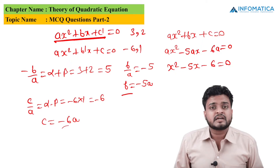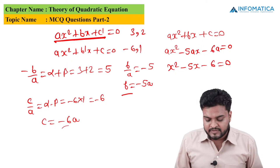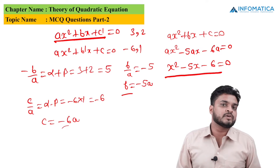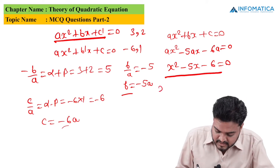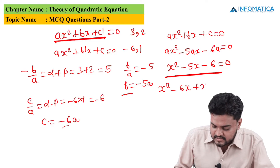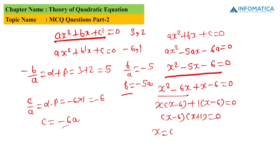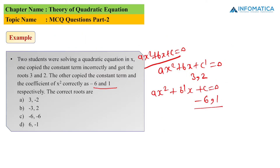Factoring x² - 5x - 6 = 0: we need factors of 6 that differ by 5, which are 6 and 1. So x² - 6x + x - 6 = 0 gives x(x - 6) + 1(x - 6) = 0, giving (x - 6)(x + 1) = 0. The roots are 6 and -1, so option D is the correct answer.